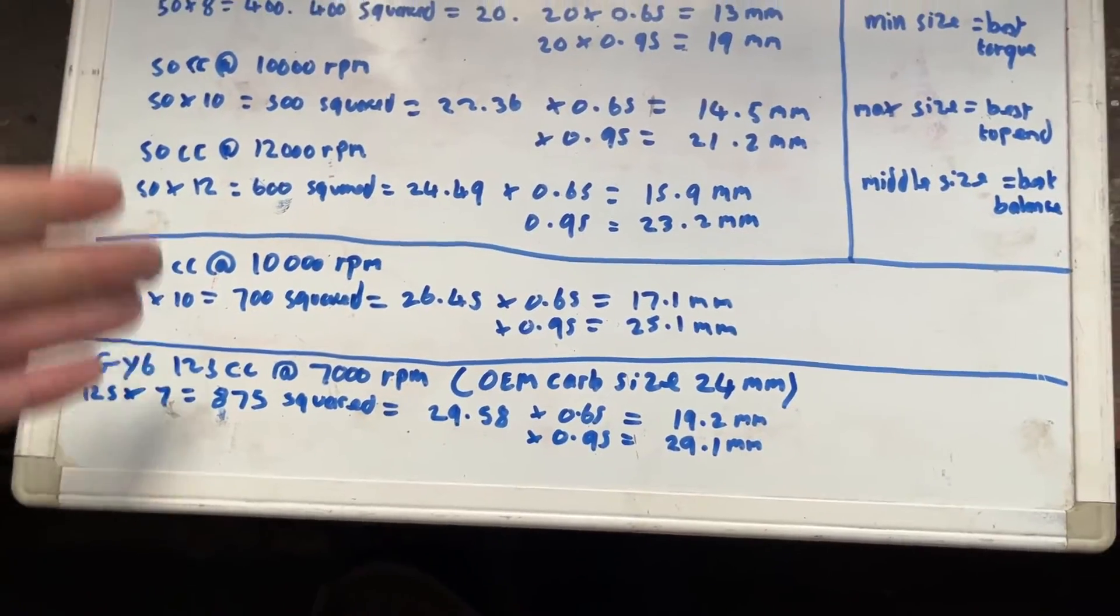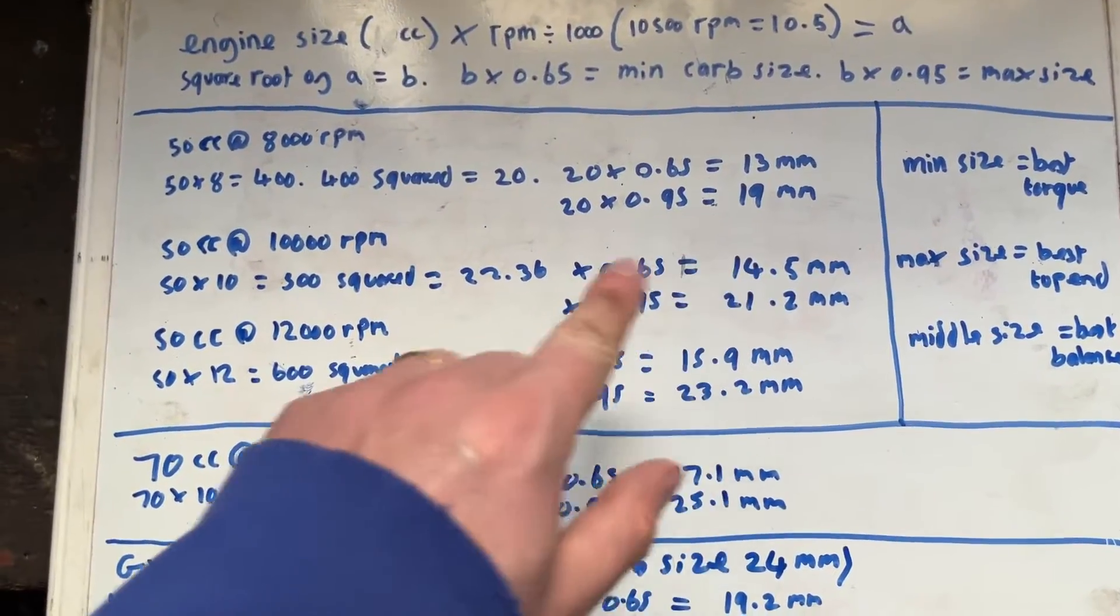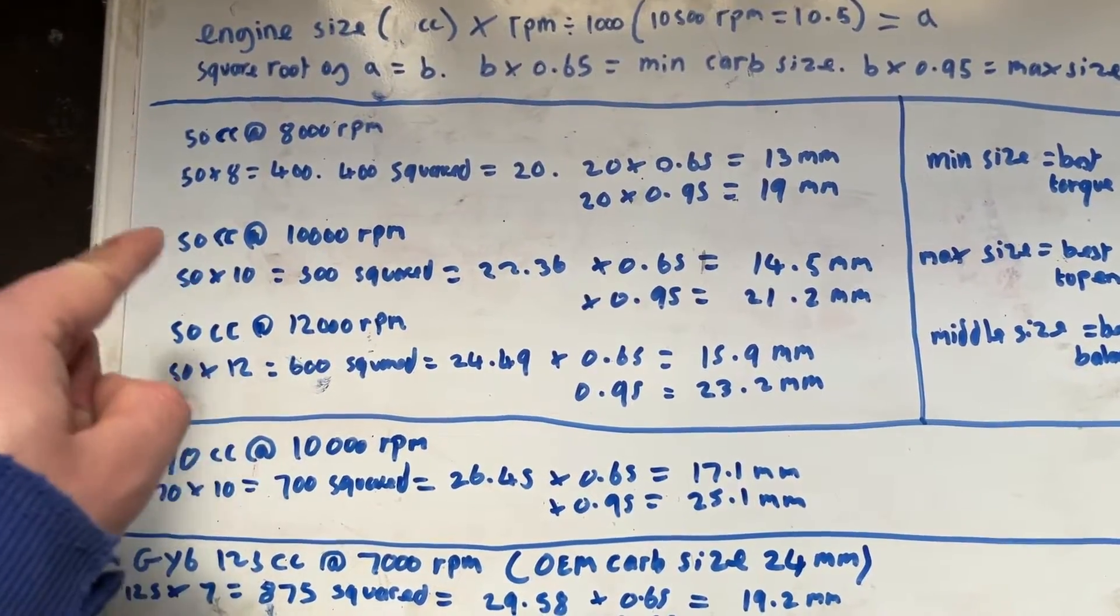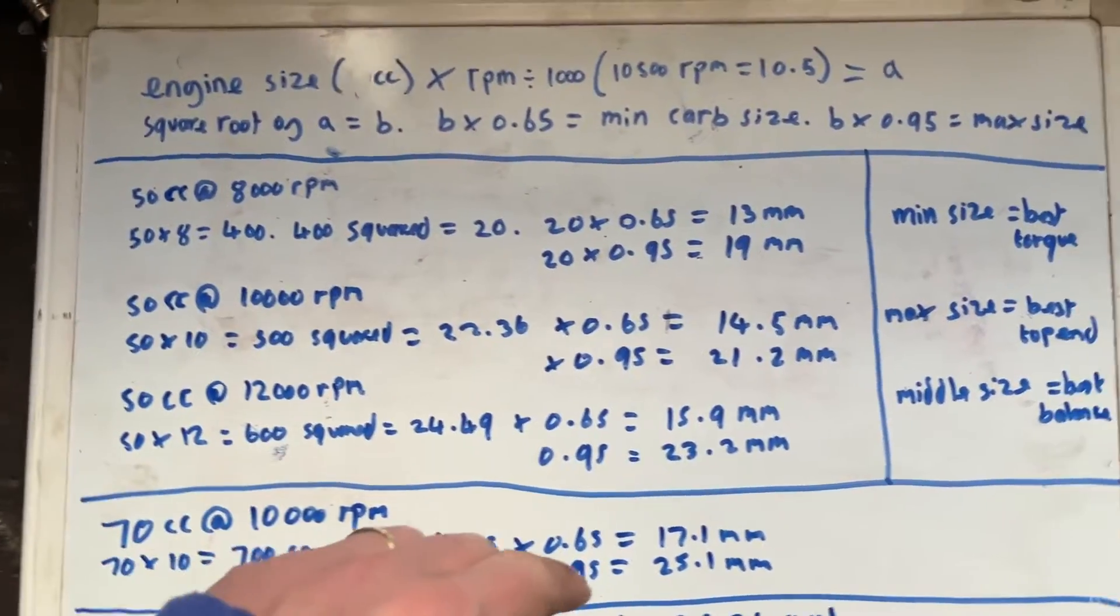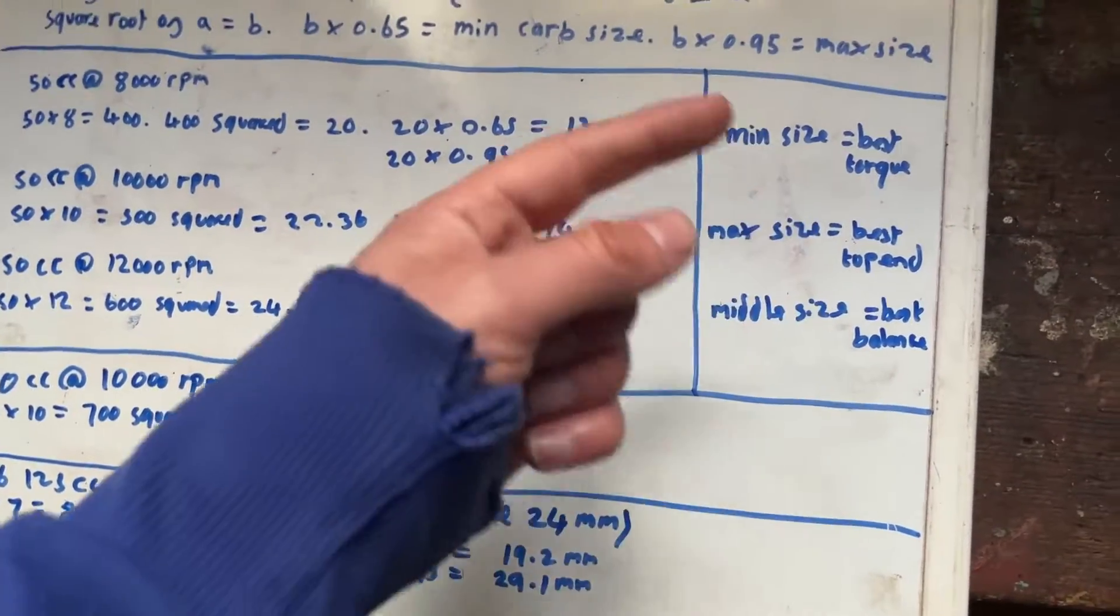But there you go. That gives you the idea. And as I say, once you've done these calculations for your engine, so your engine's CC times its max RPM, and you've got these two numbers, you've got your minimum and your maximum, you can then decide what you want.